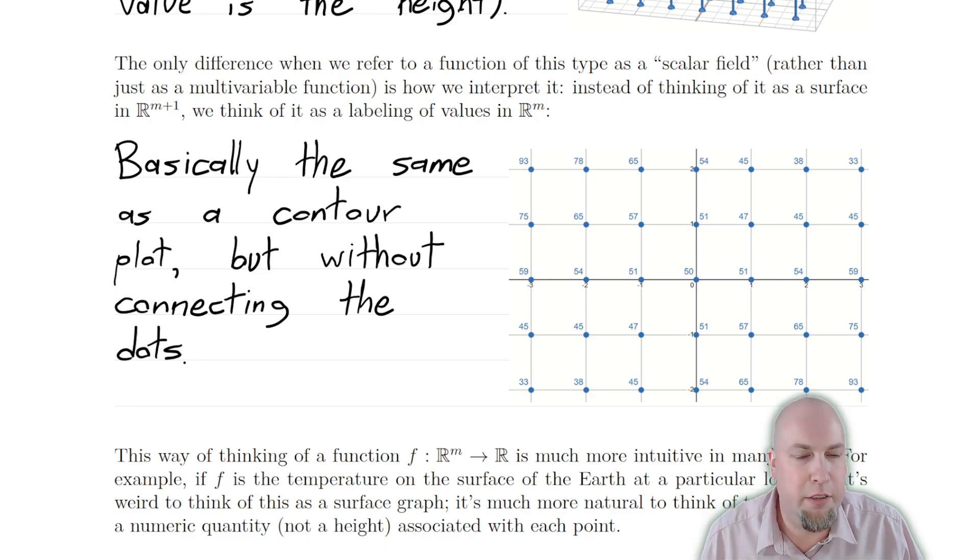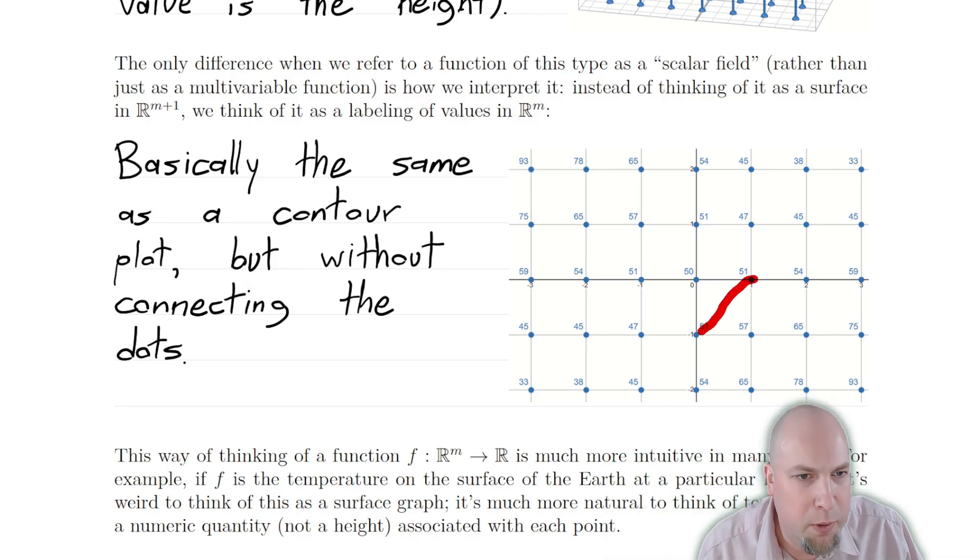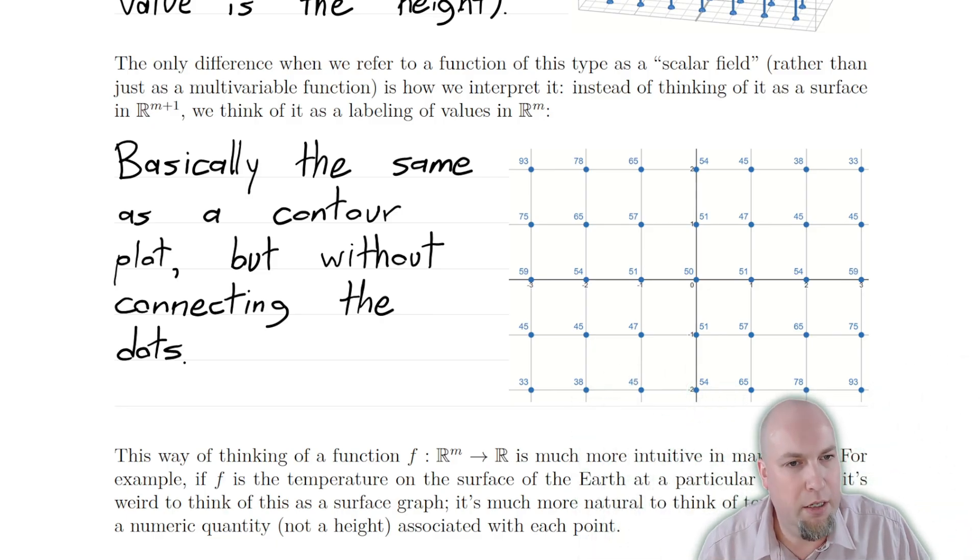And I should note that this corresponds very naturally to contour plots, which you've probably already seen in an earlier course as well. For contour plots, what you did was it was just this sort of picture as well, except instead of just labeling the points on a discrete grid, you connected the dots between dots that had the same function value. So for example, if there was a contour labeled 51, it would go through these three points here, and then you would just try to complete the shape. And that would tell you what the contour looks like. It was just curves of constant output. In other words, connecting all the dots on this plot that have the same label attached to them. That's what a contour was.